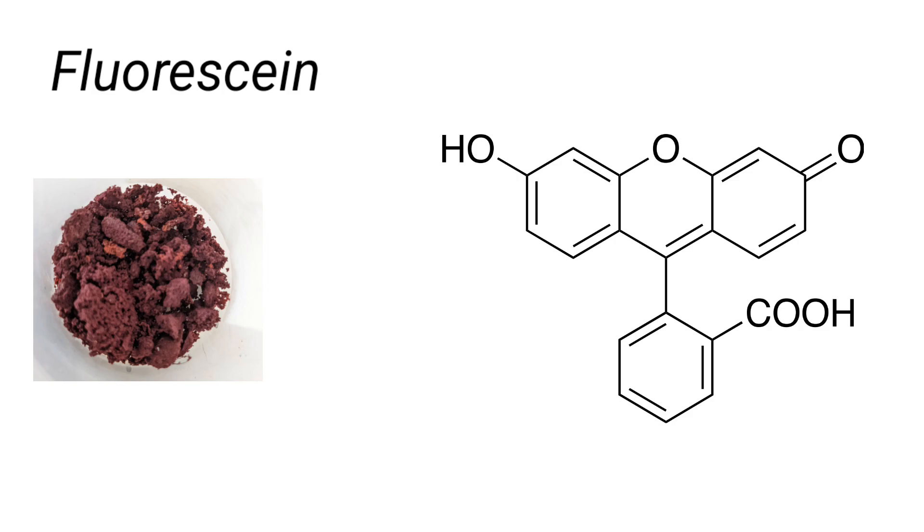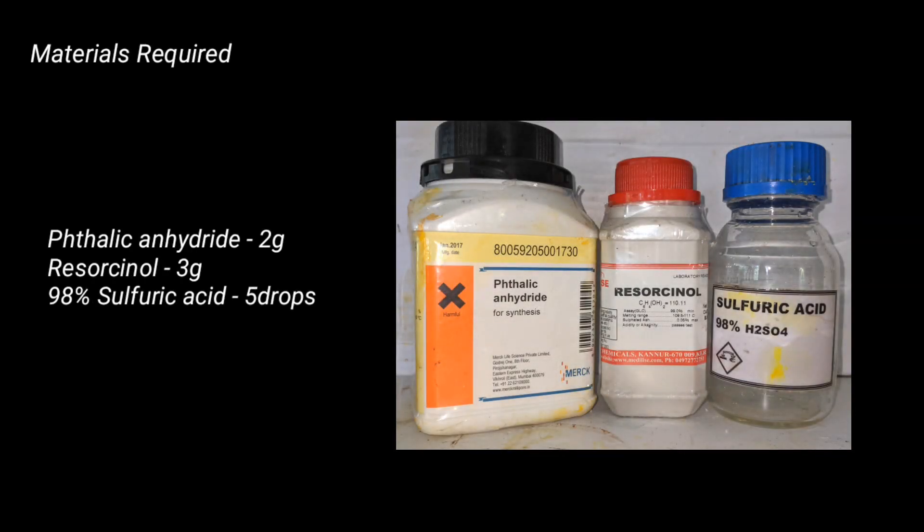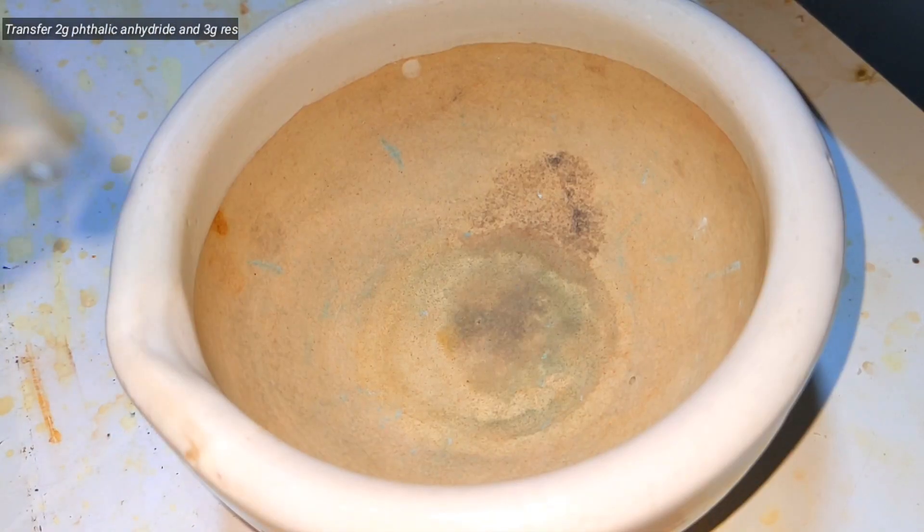It has a maroon red color in solid form. Materials required for this synthesis include 2 grams of phthalic anhydride, 3 grams of resorcinol, and 5 drops of concentrated sulfuric acid.